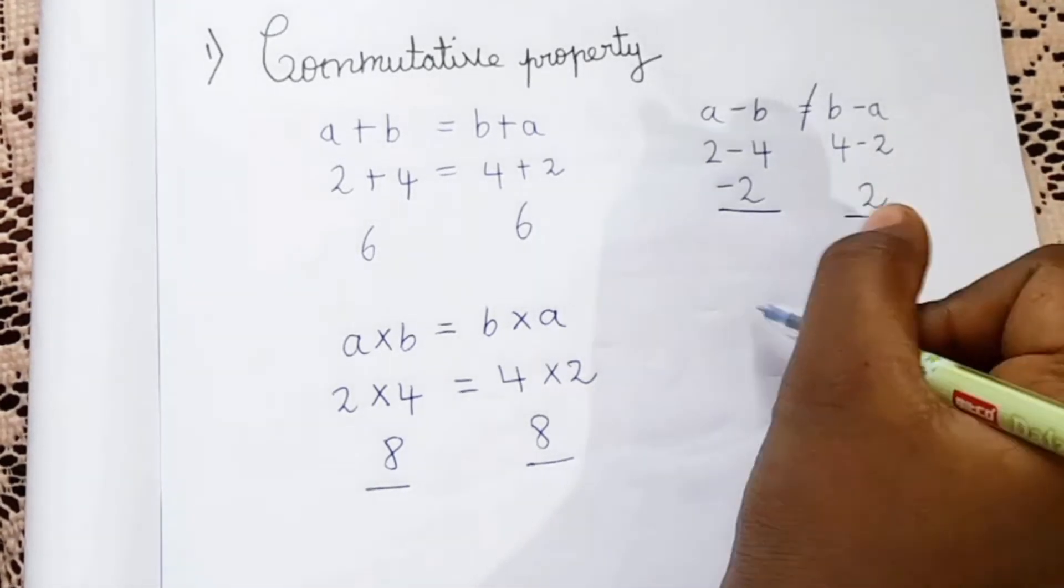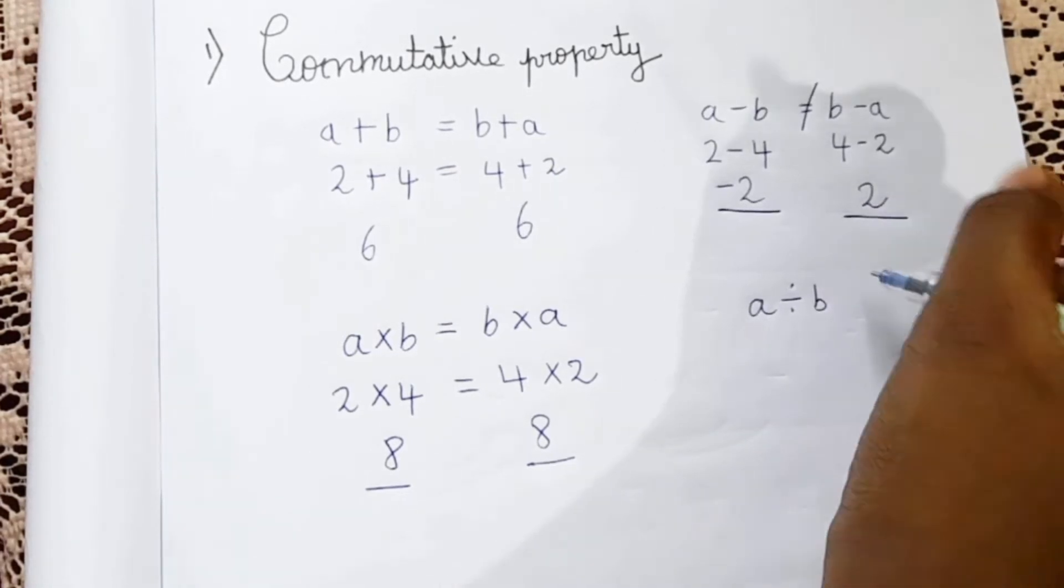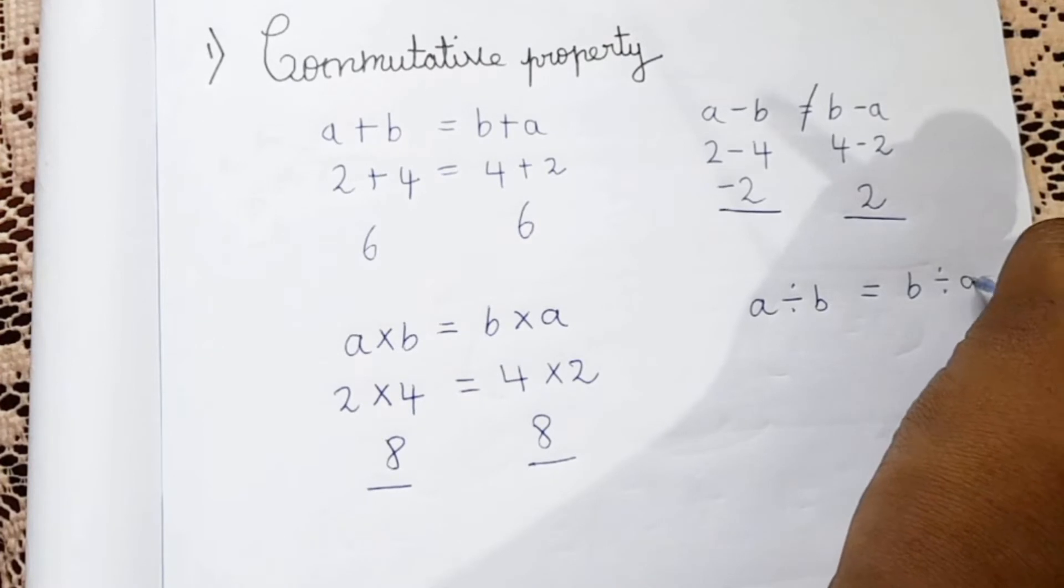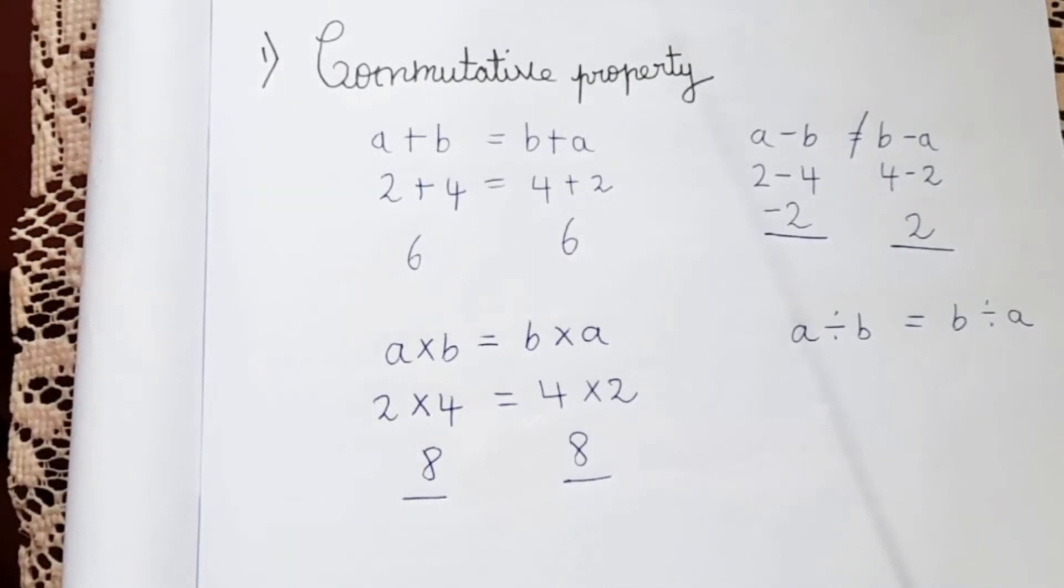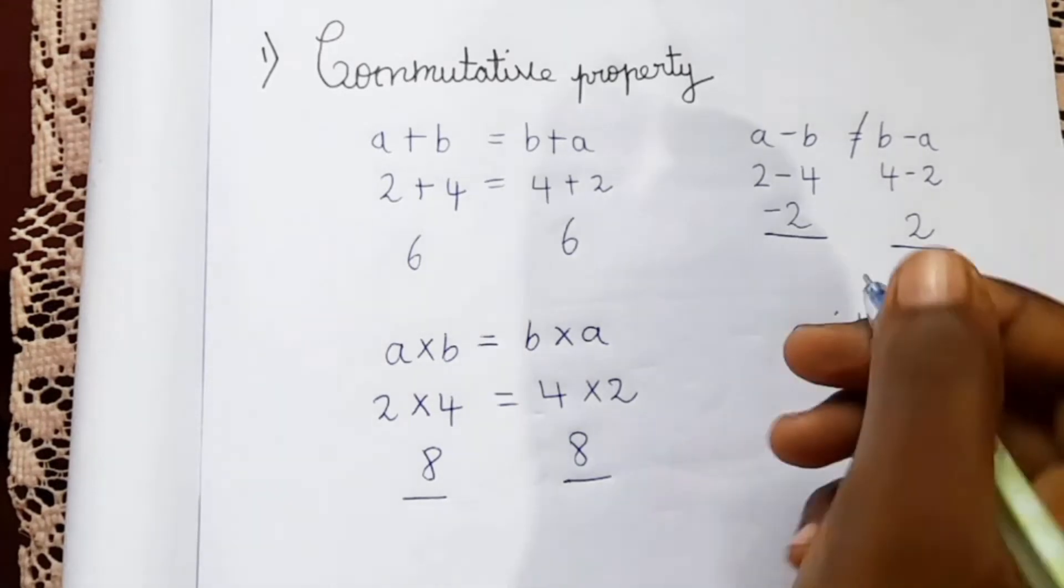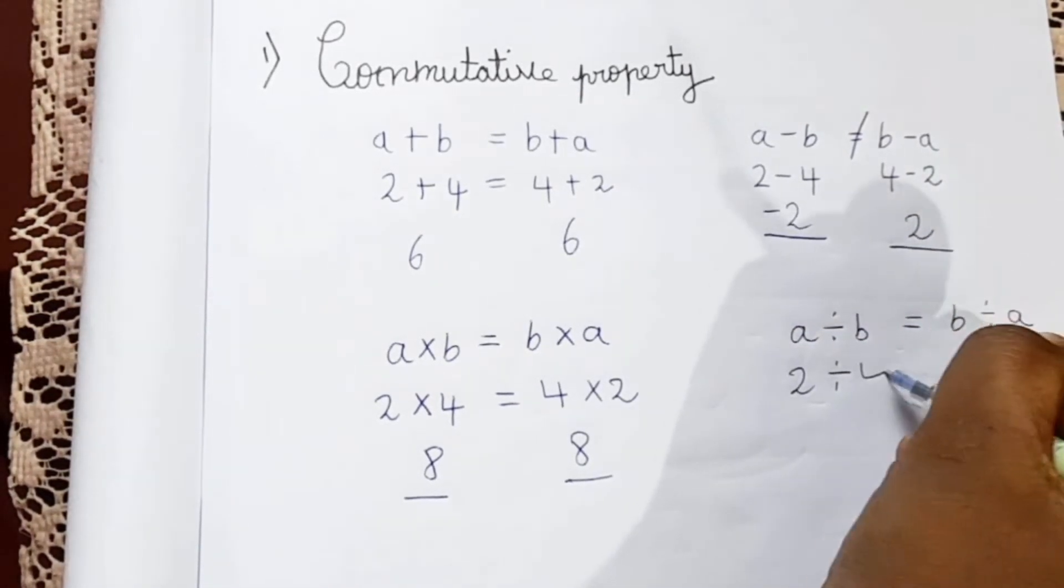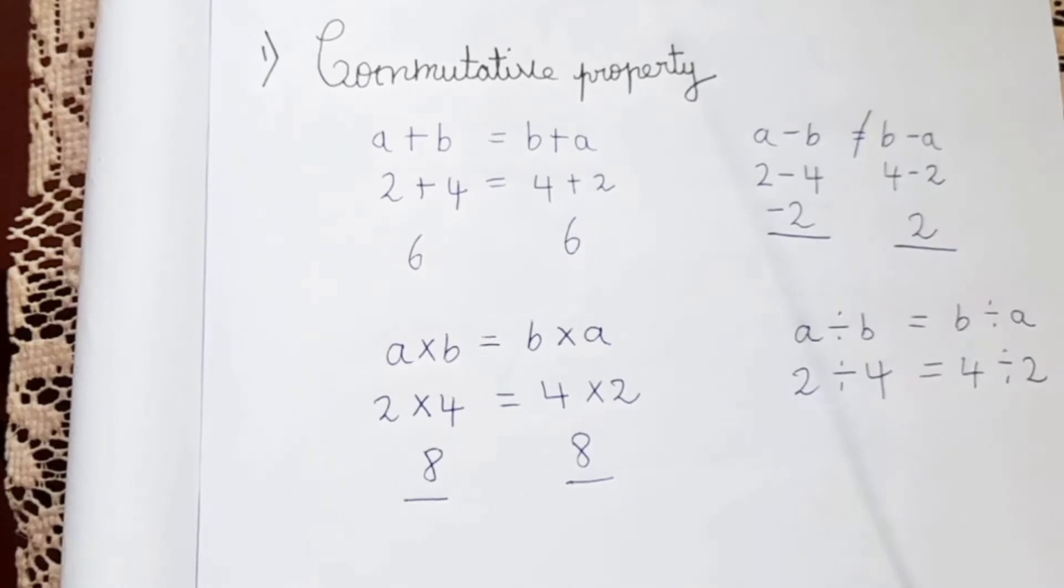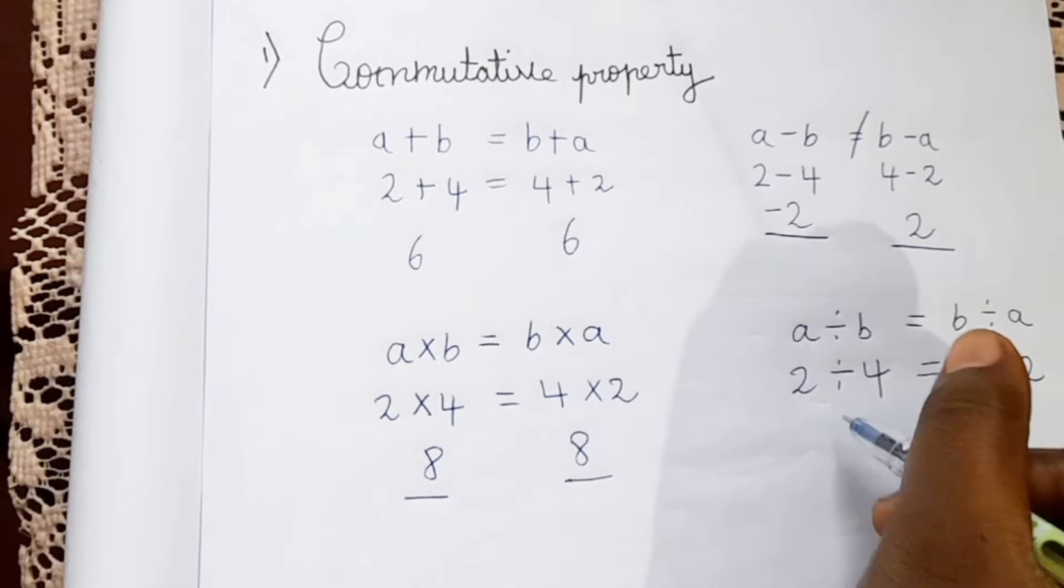So now let's check in division. So a divided by b is equal to b divided by a. So guys here we can name a as 2 and b is 4, which is equal to 4 divided by 2. So now if we divide 2 divided by 4 we get the answer 2.